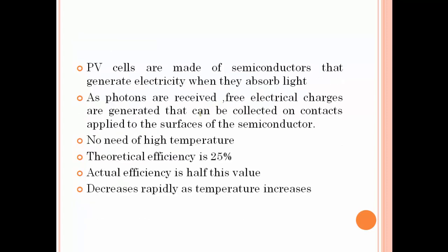PV cells are made of semiconductors that generate electricity when they absorb light. As photons are received, free electrical charges are generated that can be collected on contacts applied to the surface of the semiconductor. In PV cells, semiconductor materials are made of free electrons.